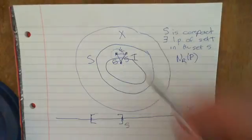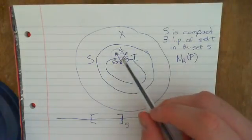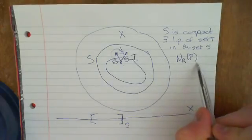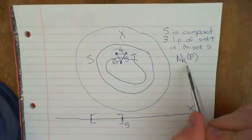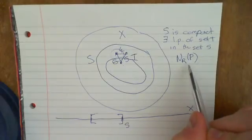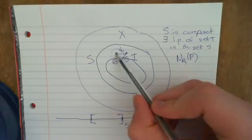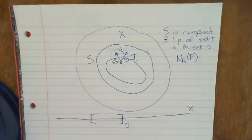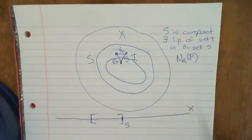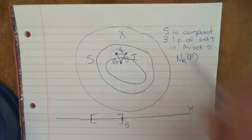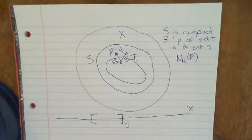That's what a limit point is then: a point that you can construct any size open ball you want, so you can let R be any number, and it will always contain a point of the set T. If this point was a limit point for the set T, then I can take an open neighbourhood around that point P of any radius, and it must always contain at least one point. That open ball must always contain at least one point of the set T.